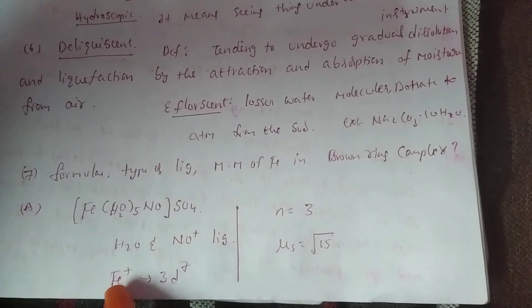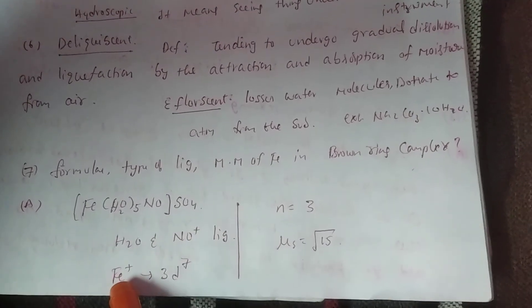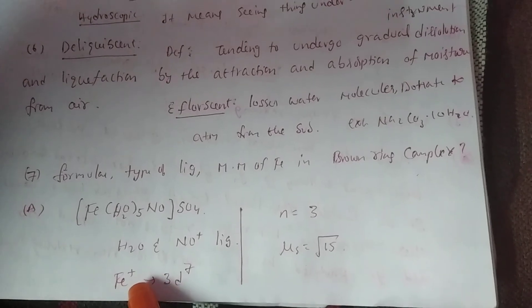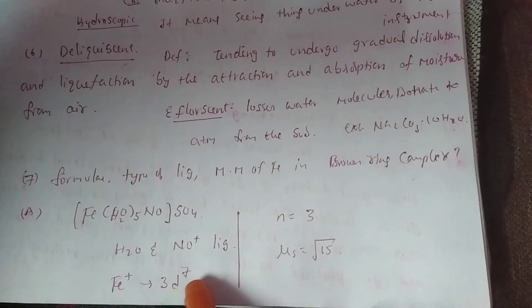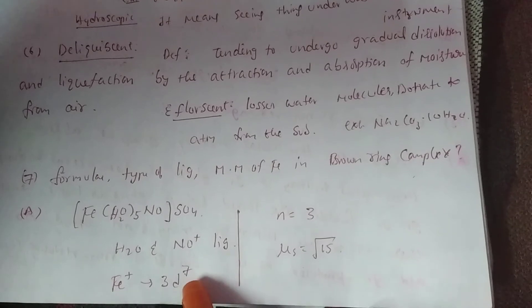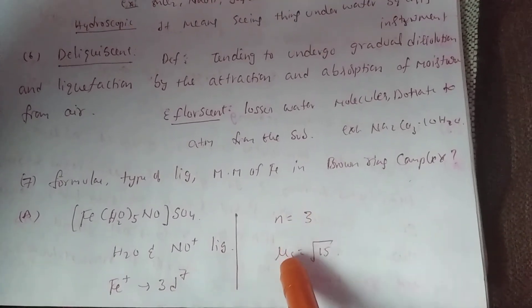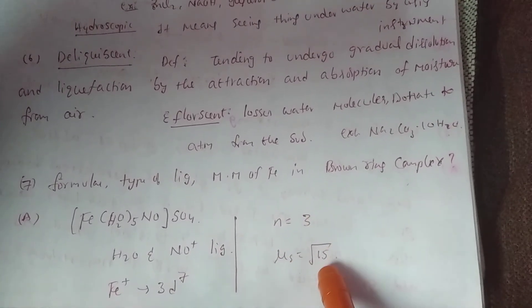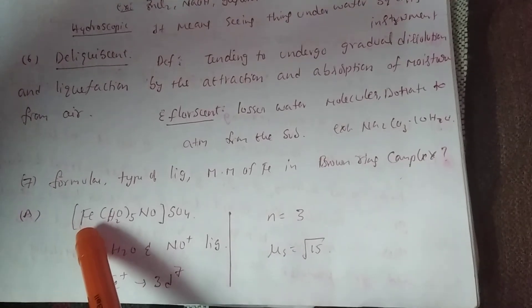NO plus means Fe oxidation state. Here Fe is in +1 state. Fe plus means configuration 3d7. 3d7 means unpaired electrons 3. So magnetic moment is root 15. It appears to be +2 state.